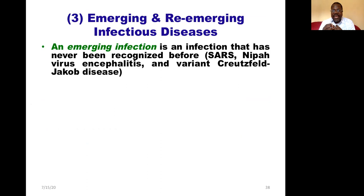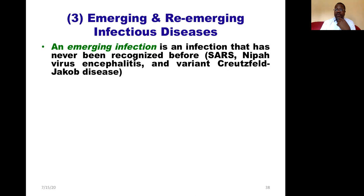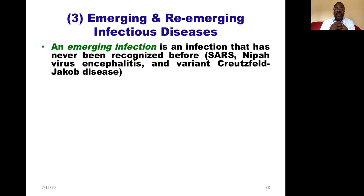The third group is emerging and re-emerging infectious diseases. An emerging infection is one that has never been recognized before — this was true during the first SARS outbreak. The current outbreak is caused by another coronavirus, but SARS was also caused by a different type of coronavirus that came before. At that time it was a brand-new infection — an emerging infection. Nipah virus encephalitis and a specific variant of Creutzfeldt-Jakob disease were also defined as emerging infections.